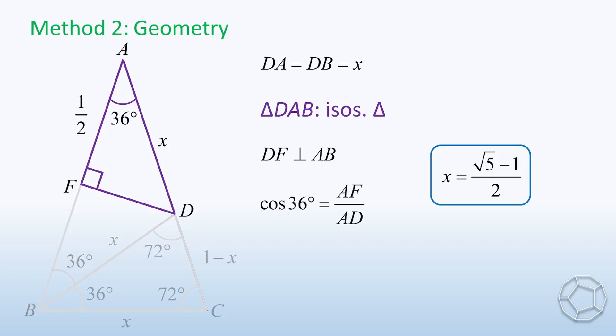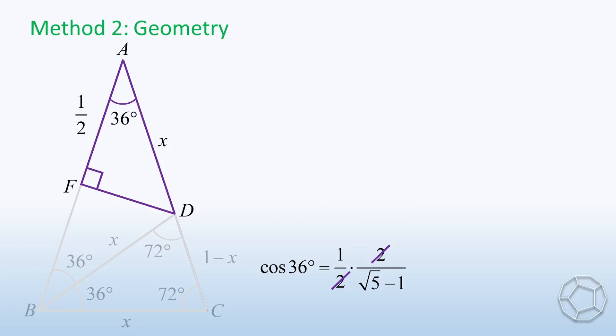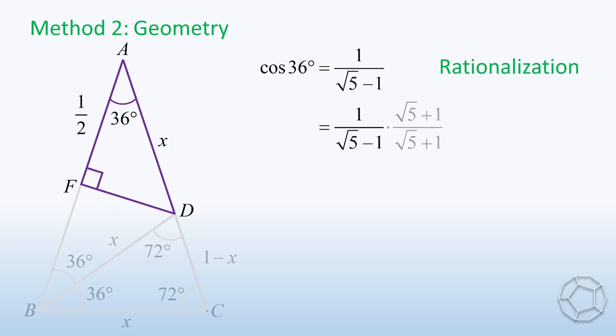Here, cosine 36 degrees is equal to AF over AD, that is, 1 over 2X. We put the value of X inside and cancel out the 2 right here. To simplify further, we make use of rationalization. Multiplied by the fraction square root 5 plus 1 over square root 5 plus 1. Again, we get the value of square root 5 plus 1 over 4.